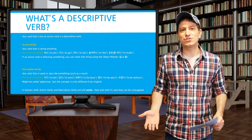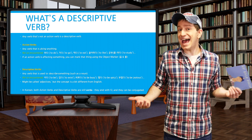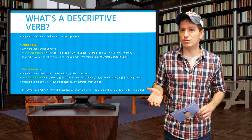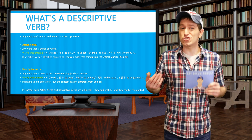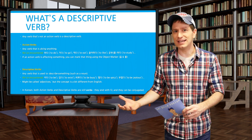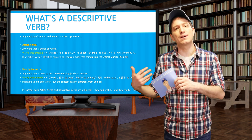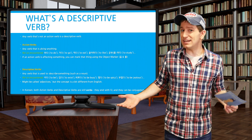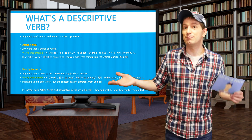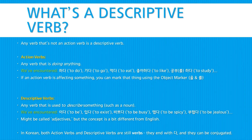A descriptive verb, however, is a verb that's used to describe something. And we have learned a few descriptive verbs already: 이다, to be, is a descriptive verb. To be isn't doing any sort of action, it simply is describing what something is. We've also been exposed to a few others: 바쁘다, to be busy; 이다, to exist; 맵다, to be spicy; 부럽다, to be jealous; and a few others.